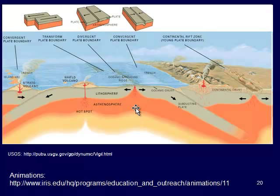At divergent plate boundaries, we have active divergence and sea floor spreading, which creates that oceanic ridge — a high point on the ocean floor because the rocks are very hot at that location. As they're pulled apart, they start to cool, get denser, and sink a little bit in the asthenosphere. The crust gets older as we move further away from that spreading center.